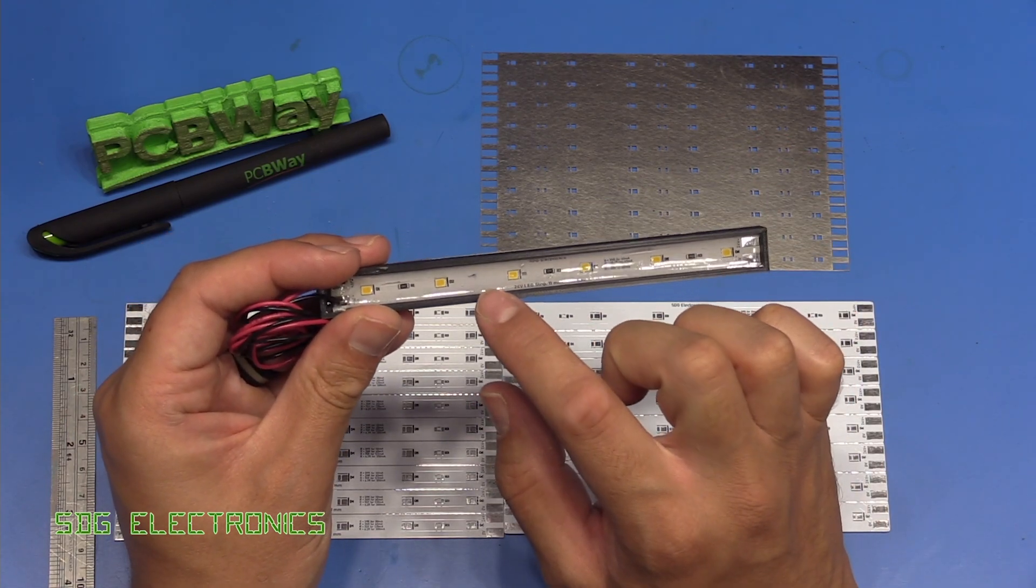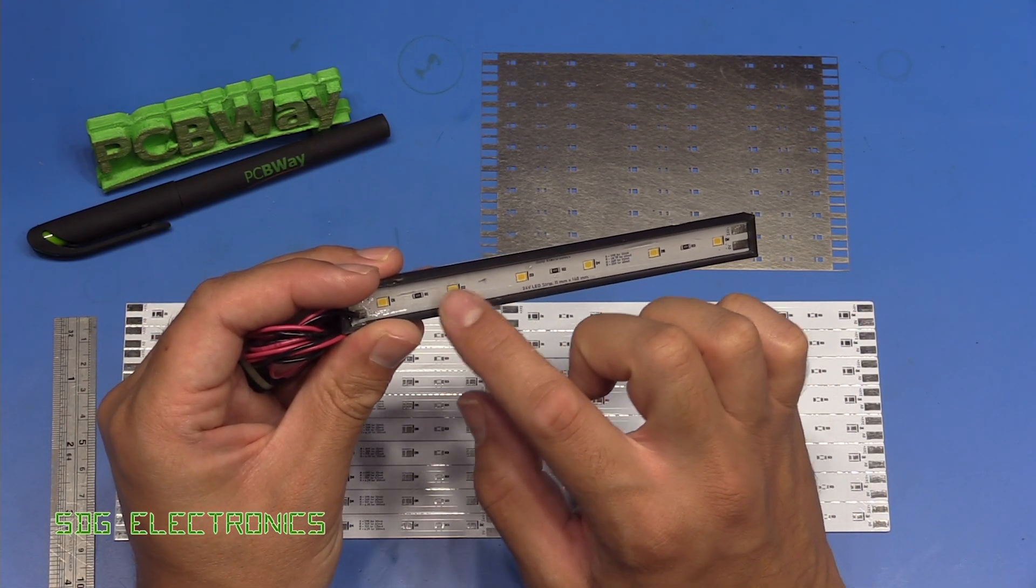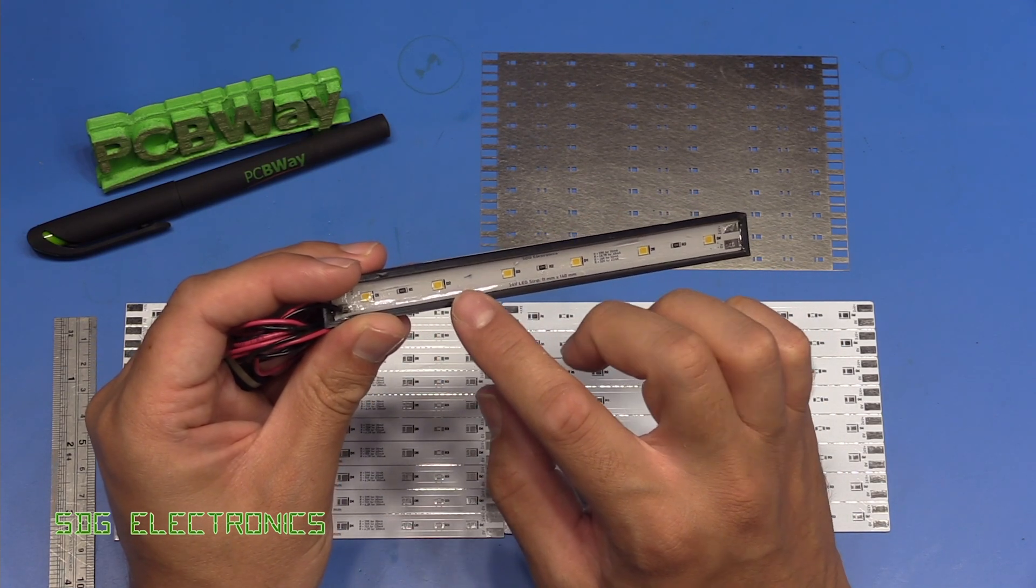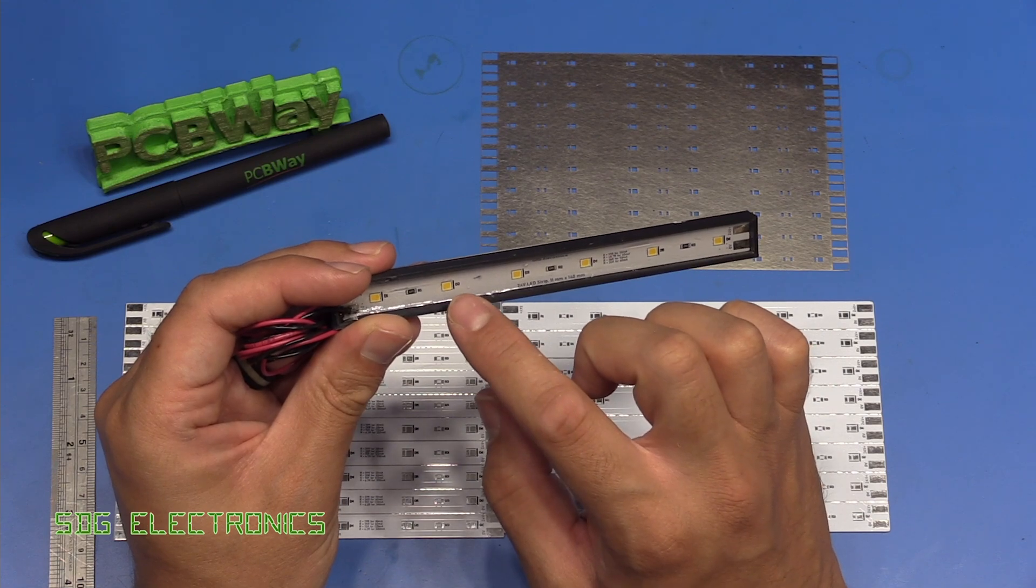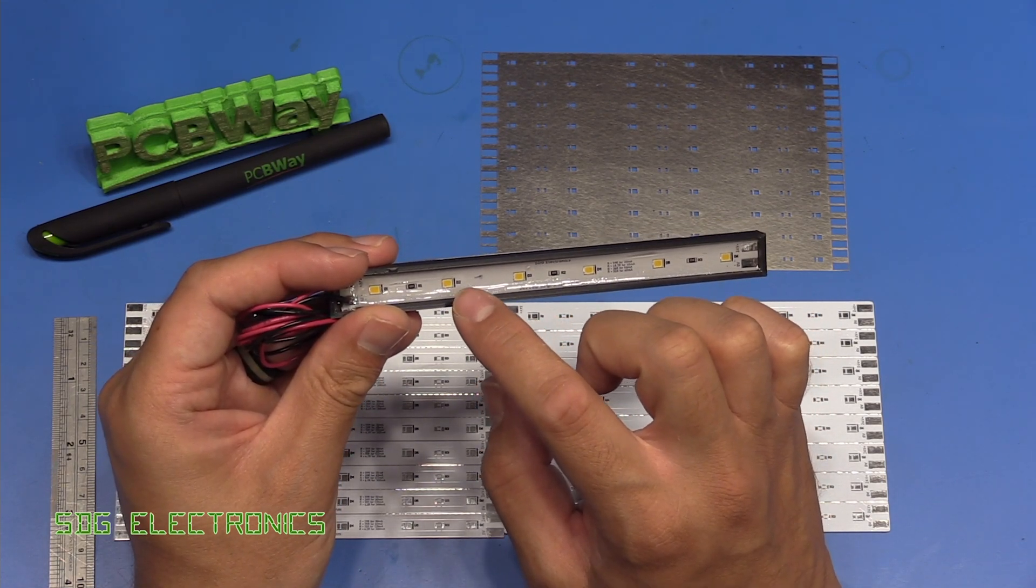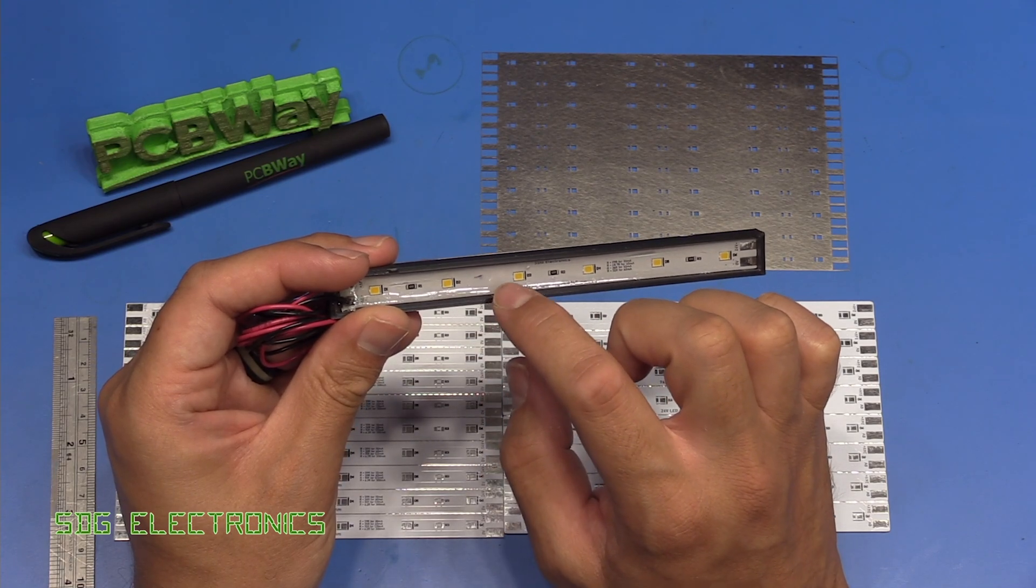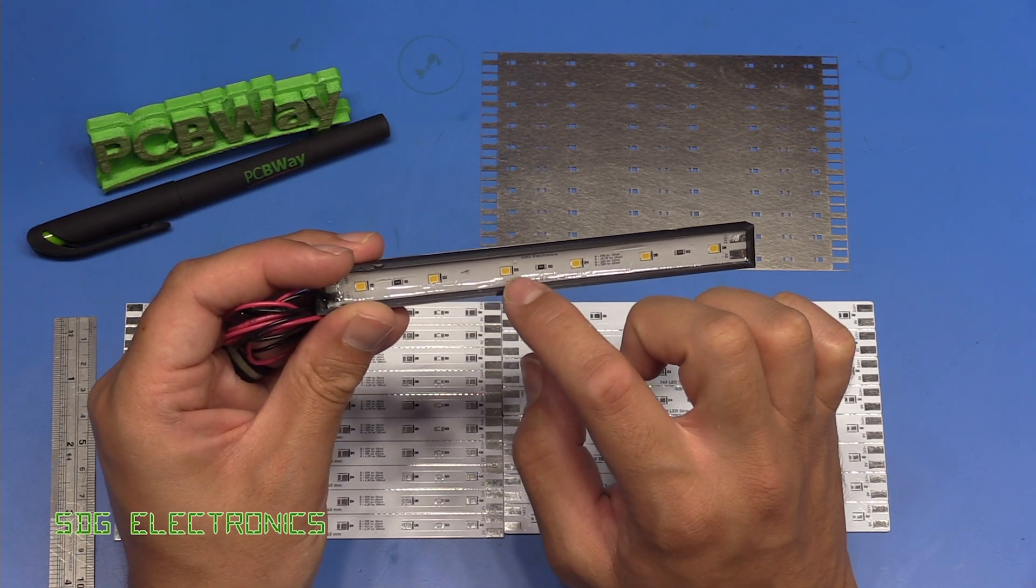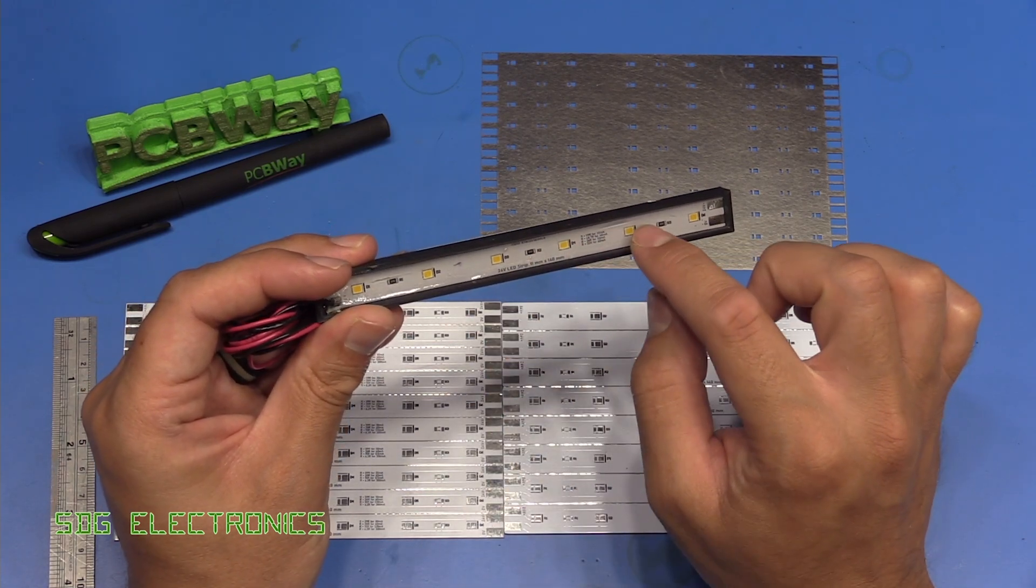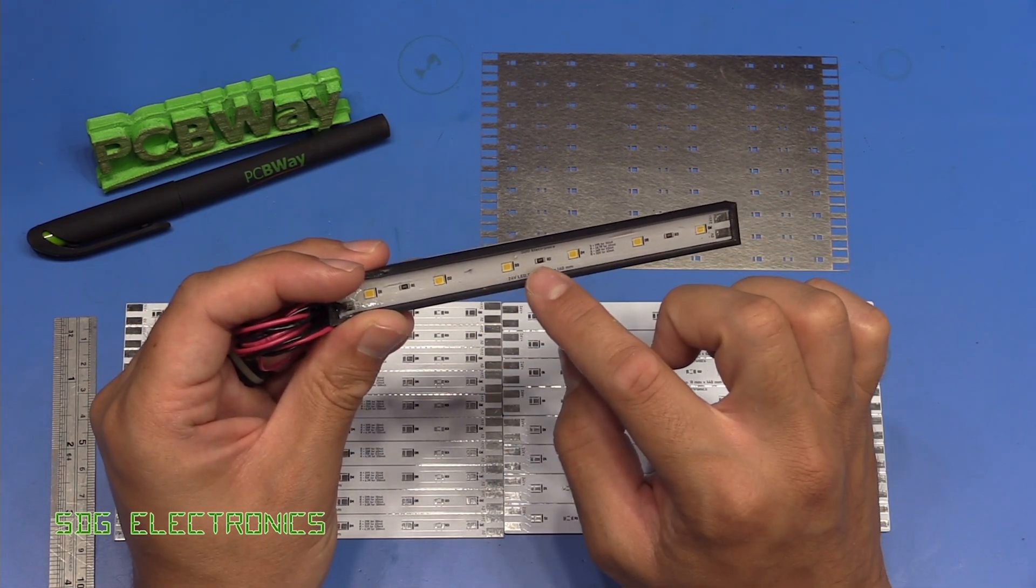But what I found is this was an FR4 PCB and if I wanted to run these LEDs at maximum current, which is somewhere around 150 milliamps, the thermal dissipation just wasn't good enough. Although I flooded as much of this PCB as possible with copper, we were getting very hot LEDs and pretty cool bits of PCB, so we weren't spreading that heat around.